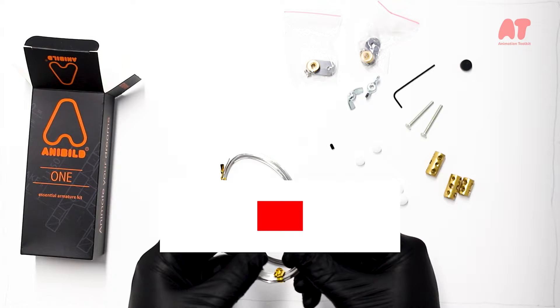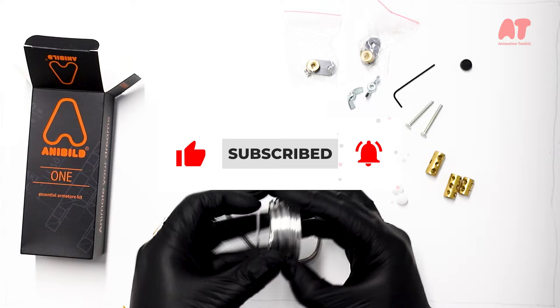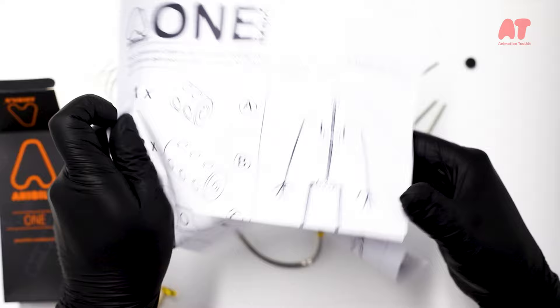There are two gauges of wire. Don't forget to like, subscribe, and hit that notification button for more videos just like this. We've got 1.5 millimeter and 1 millimeter wire, and we're going to use both to make this wire armature.